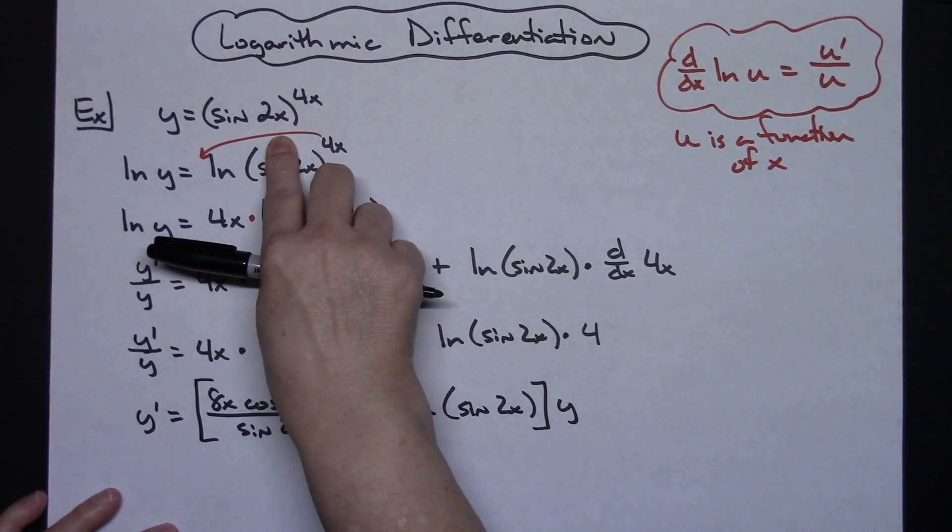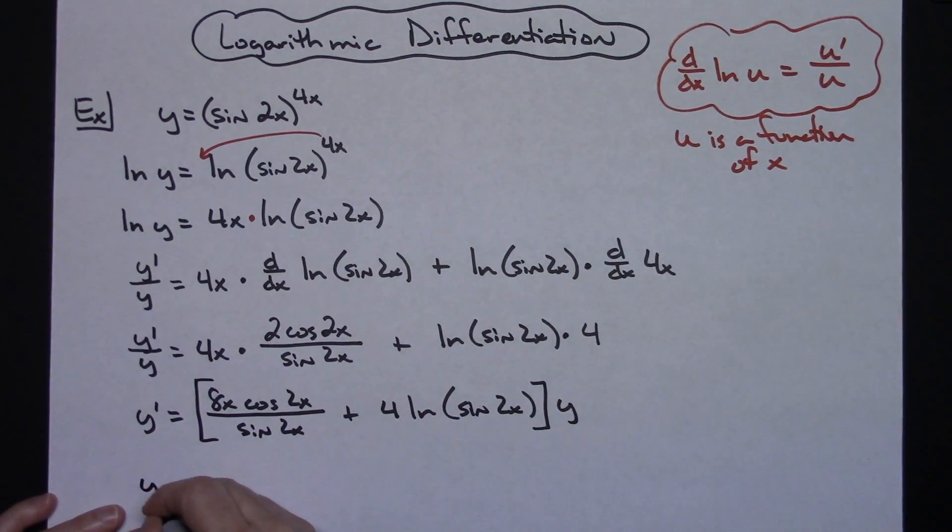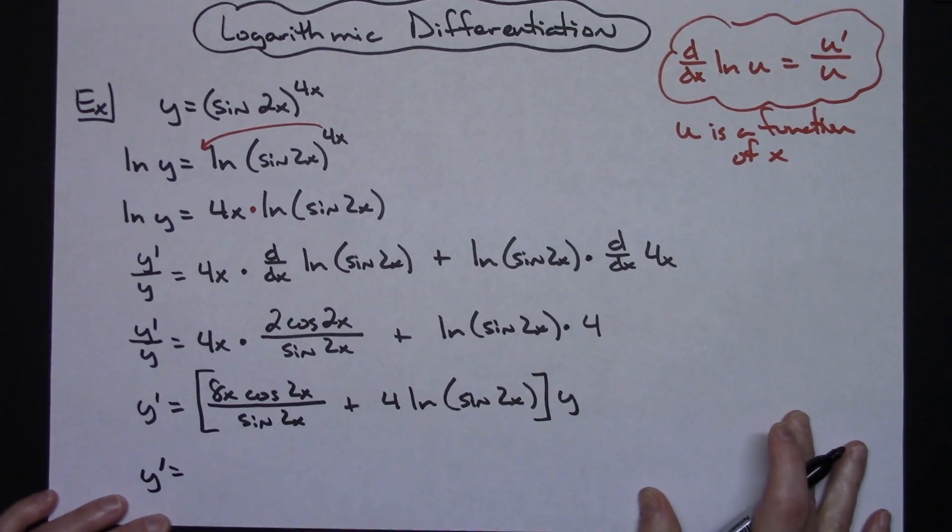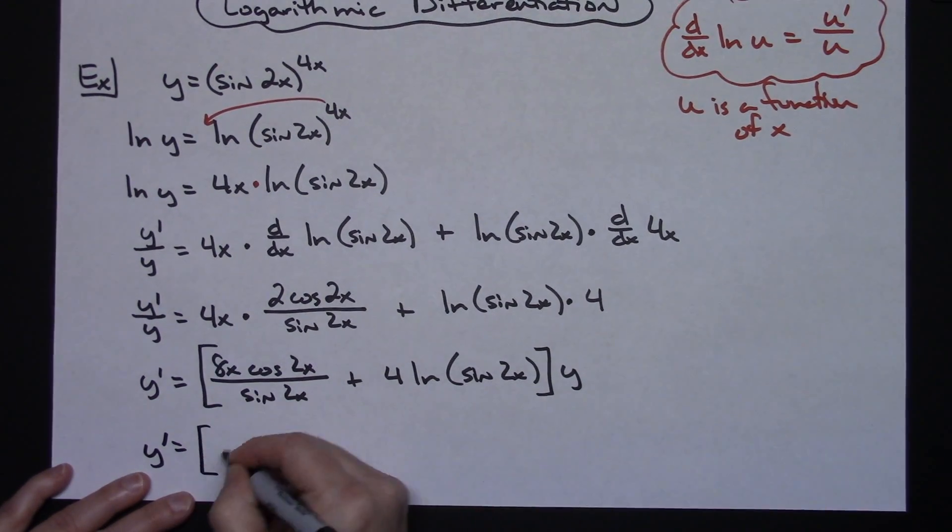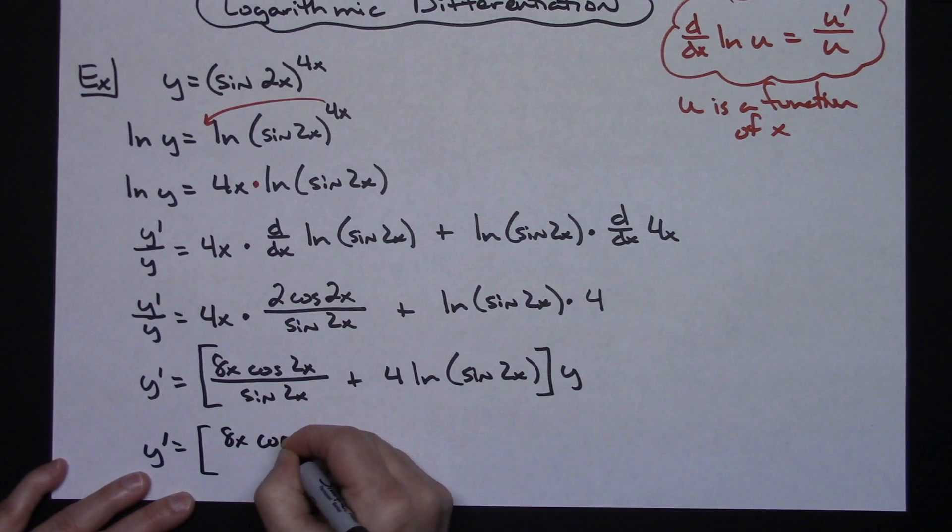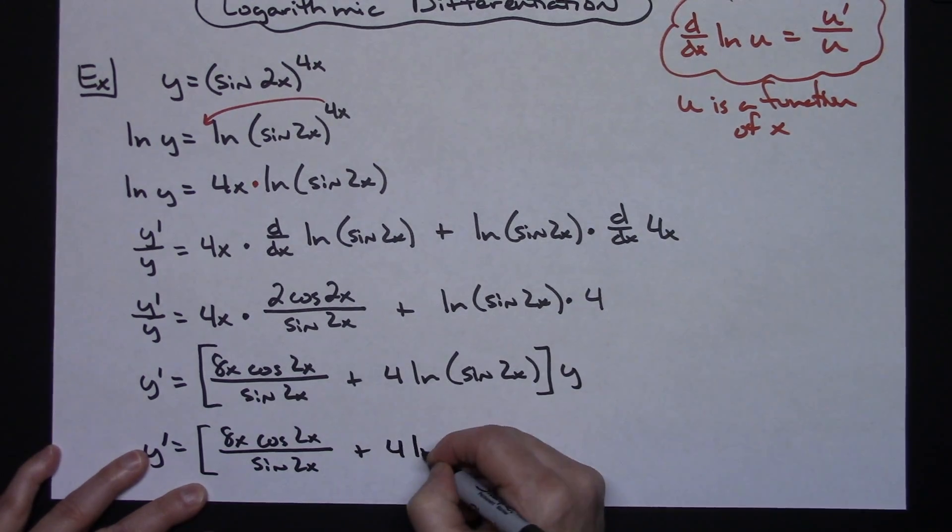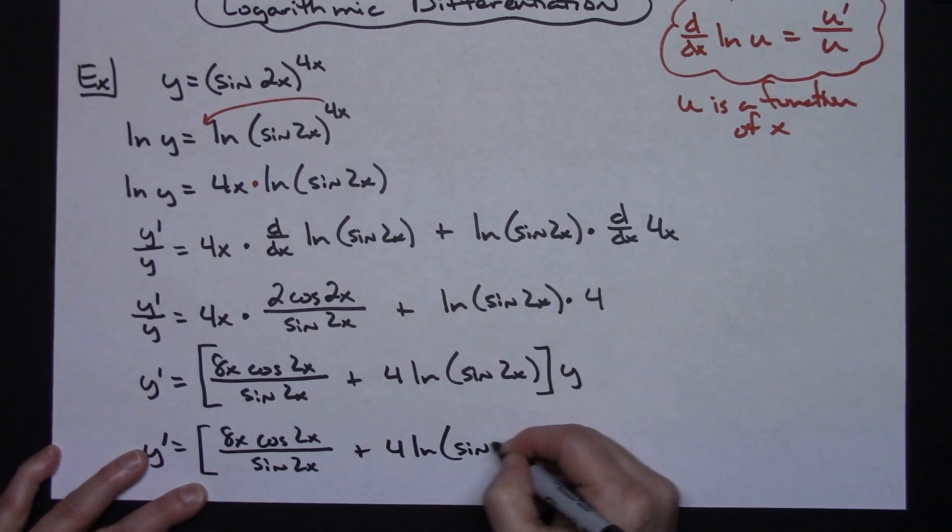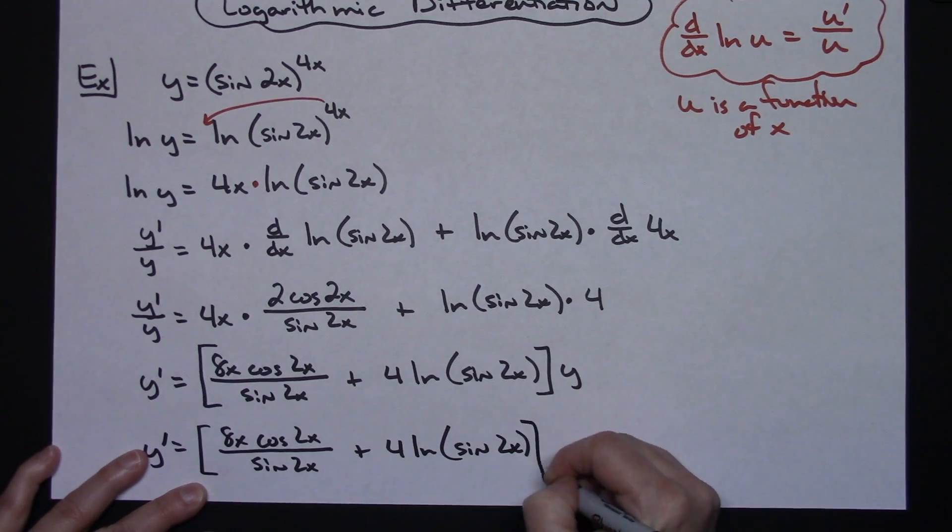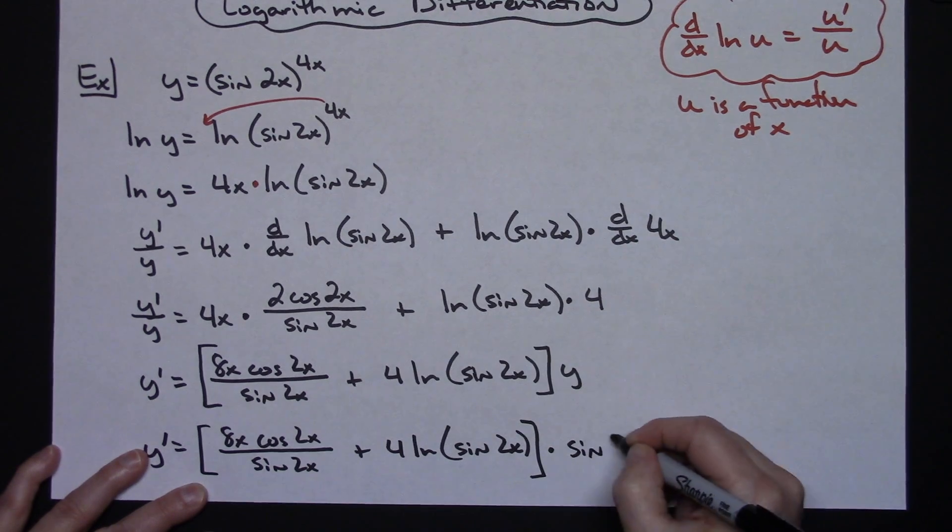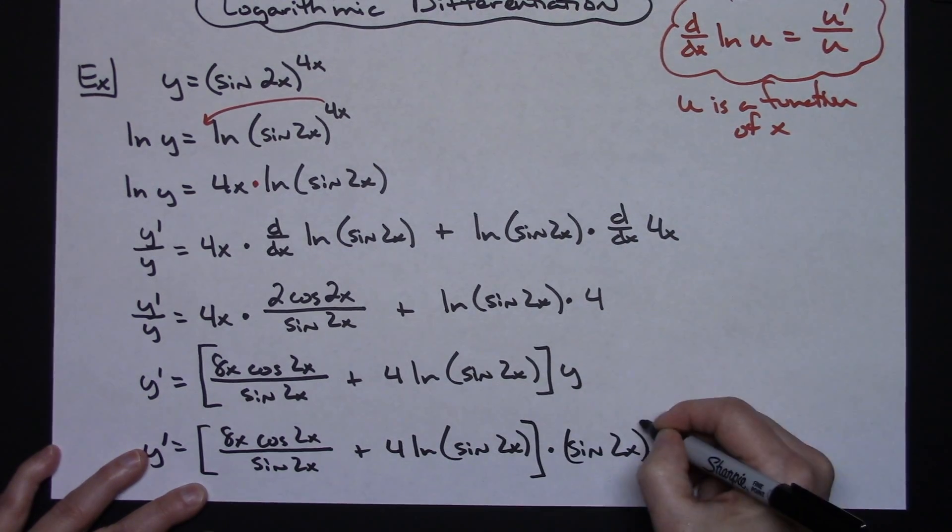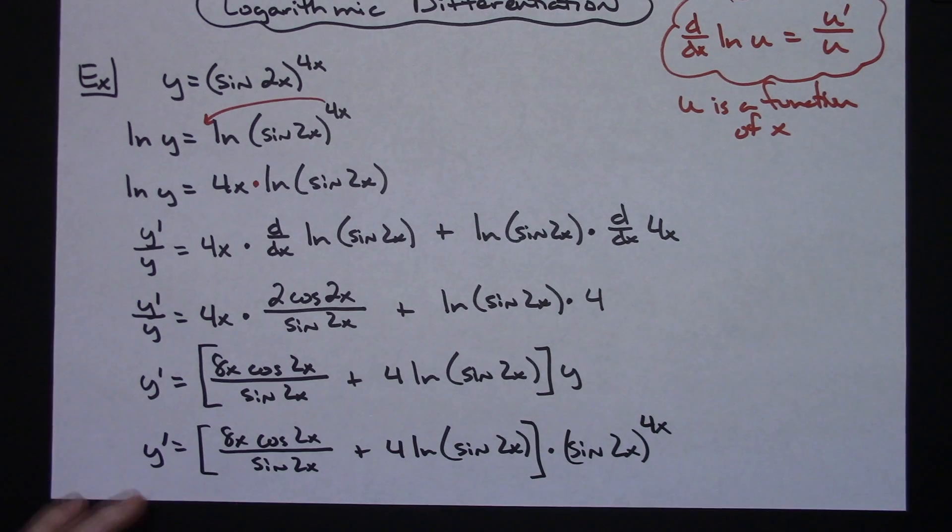And then last step would be to do a substitution for the y. Originally, the problem said y is sine of 2x raised to the 4x. So I'm going to make that substitution. So I'll have y prime is equal to 8x cosine 2x all over sine 2x plus 4 natural log sine 2x, replacing y, then times sine of 2x raised to the 4x.